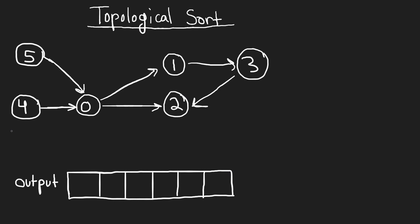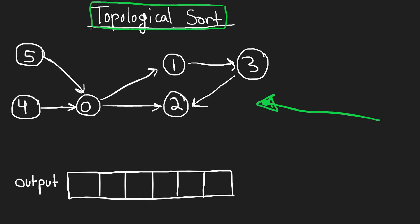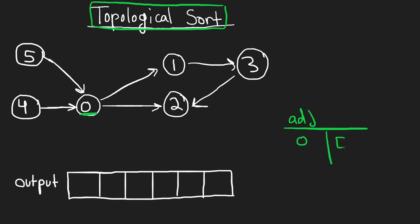So now let's look at the general algorithm, which is actually topological sort. This is a standard graph algorithm, but you don't even need to know what it is to solve this problem — this problem teaches you what topological sort is. Similar to course schedule one, starting at every single node we're going to run depth-first search. Before we do that, we need to build an adjacency list — a prereq map — so for each node we know its neighbors, i.e., its prerequisites.